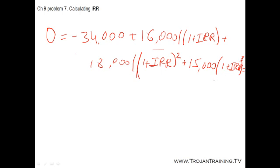Using a spreadsheet, financial calculator, or trial and error, we solve this equation and find that the internal rate of return equals 20.9 — a little over 20%.